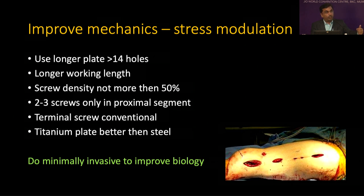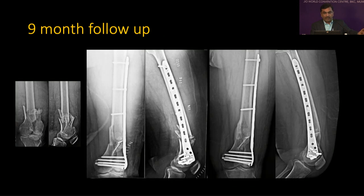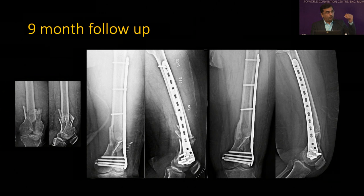With a single plate, if you do proper stress modulation, you can very well heal those patients. What you need to do: use a longer plate with a longer working length; screw density should not be more than 50%, with two to three screws only in the proximal fragment; the terminal screw can be conventional. Titanium is always better than stainless steel for stress modulation. Whenever possible, do it minimally invasive. This is a severely comminuted distal femoral fracture — we did bridge plating with a locking plate using these principles — and there was nice healing at nine months. Improving mechanics doesn't always mean putting an additional medial plate.